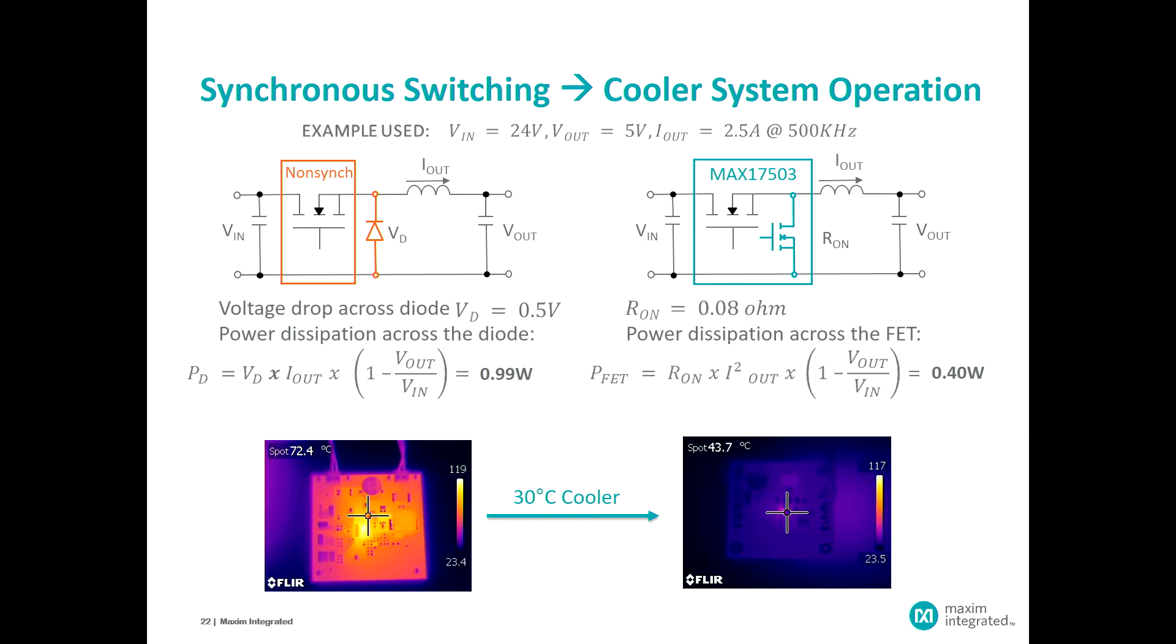When we went to this 80 milliohm RDS on FET as a synchronous rectifier, everything else remaining the same, the power dissipation is less than half of what the diode would be. And that has very dramatic implications. When we did a thermal plot of the PC board with the entire regulator on it, you could see there was a 30 degrees C temperature differential just caused by the savings in switching from a discrete diode to a power MOSFET.